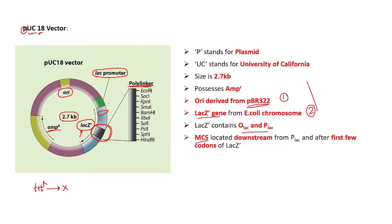The MCS or polylinker region contains a number of restriction sites for various restriction enzymes. These are the sites where you can cleave the PUC18 vector and insert your gene of interest to generate a recombinant DNA molecule. So the place where you cut and insert your gene of interest is this multiple cloning site, present exclusively within the lacZ region.